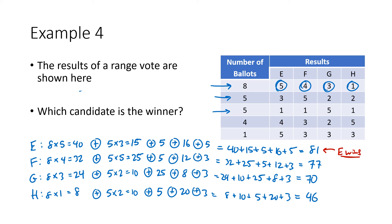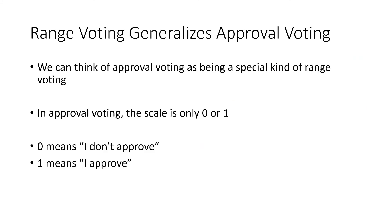Range voting is really a generalization of approval voting. Approval voting is a special kind of range voting with a scale of zero or one — you either give a candidate a zero if you didn't vote for them, or a one if you did. Multiplying by zero adds nothing to the total; multiplying by one just adds that number of ballots. General range voting lets you have shades of gray — scales like zero to ten or one to one hundred.